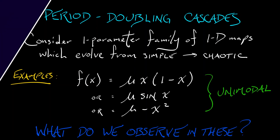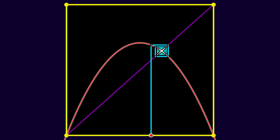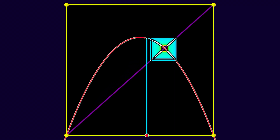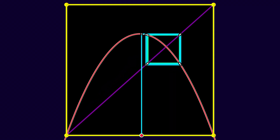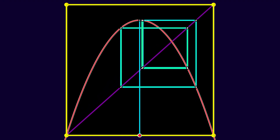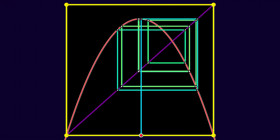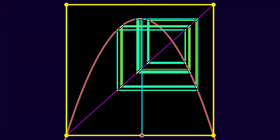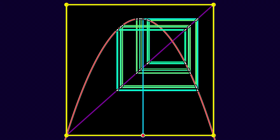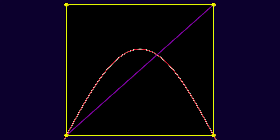We've seen the logistic equation, where as we get to a certain critical parameter, we get a period doubling. And then if we very slowly increase that, we get another period doubling, and then another, giving us a cascading phenomenon that limits to a chaotic dynamical system. Now what happens if instead of the logistic map, we switch to a sine model, mu times sine of x? As we increase mu, we see something very similar happening.